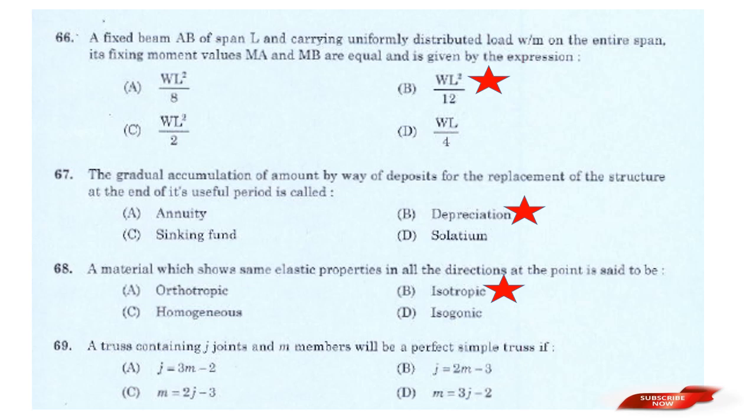Question: A truss containing J joints and M members will be a perfect truss if? Answer: Option C — M = 2J − 3.